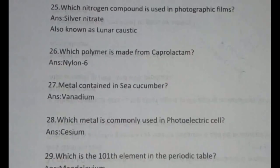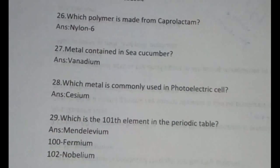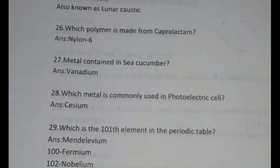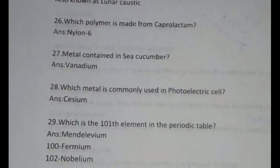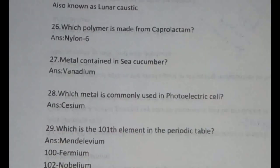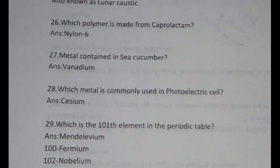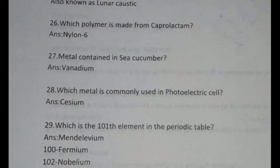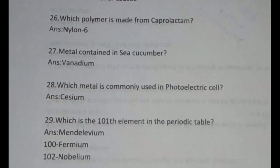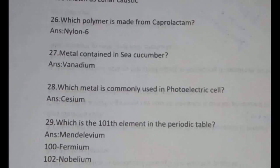Which metal is commonly used in photoelectric cells? It is cesium. Which is the 101st element in the periodic table? In recent technical assistant and research/project assistant examinations, they ask elements after the 100th element. Fermium is the 100th element, mendelevium is the 101st, and nobelium is the 102nd.